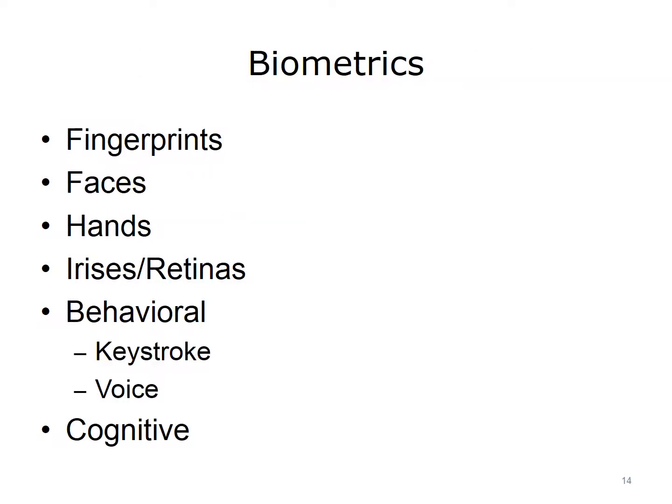Biometrics are unique to an individual. Typical biometrics are fingerprints, faces, hands, irises, or retinas. These are scanned by a system and compared to the image on file; if they match, the user is authenticated and granted the appropriate access. Another type is behavioral biometrics. An example is looking at how a person types — the system measures the amount of time a user dwells on a key and the time it takes to move between keys, and this behavior is compared to the stored behavior. Another behavioral biometric is someone's voice. A new form is cognitive biometrics, which looks at how a user responds to a situation or his thought process.